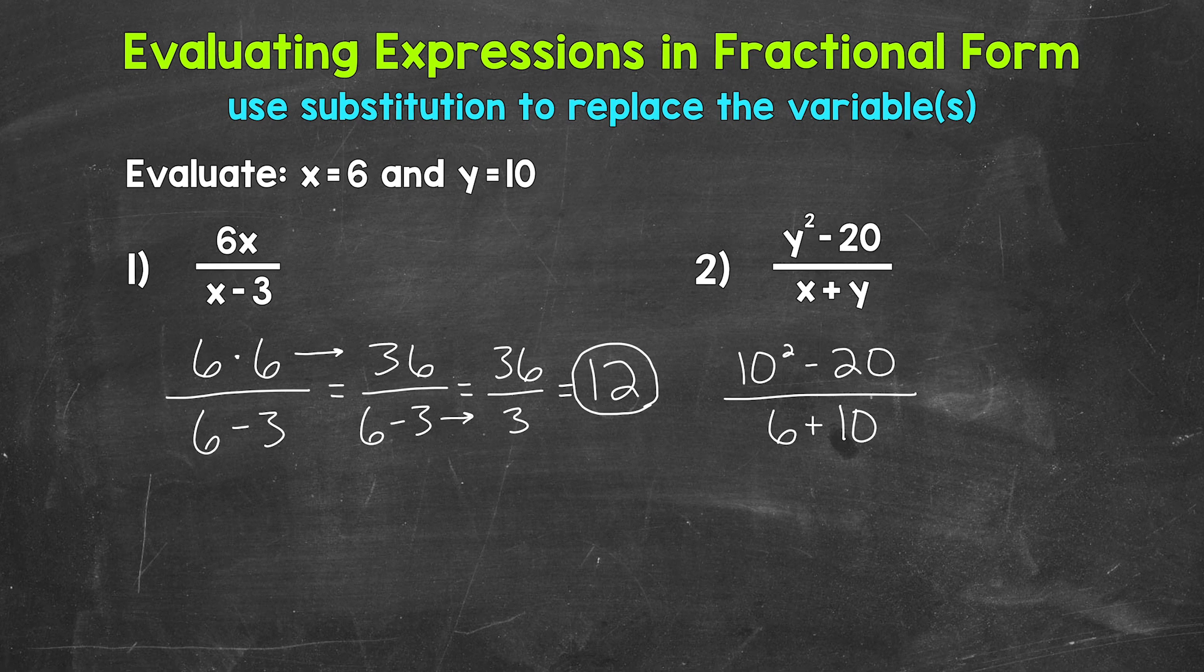We have an exponent and subtraction. Exponents come before subtraction as far as the order of operations go. So we need to start with 10 squared, which means 10 times 10. So 10 squared equals 100. Let's work to the side here, starting with the top. So 10 squared equals 100 minus 20 over 6 plus 10. Now we can subtract.